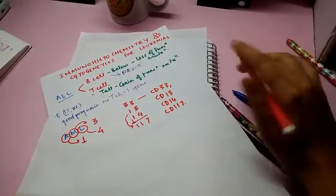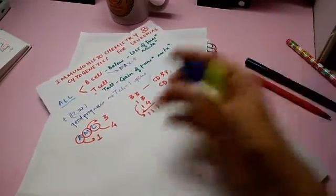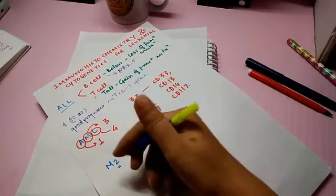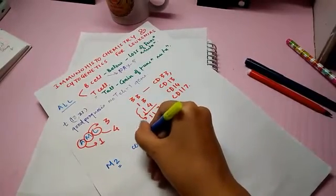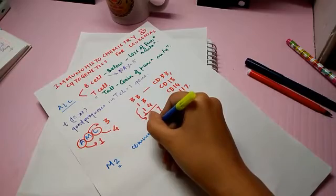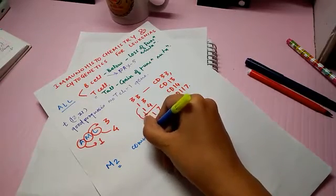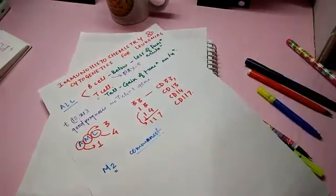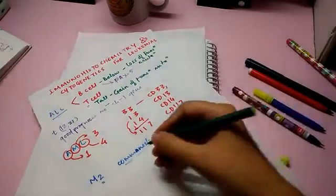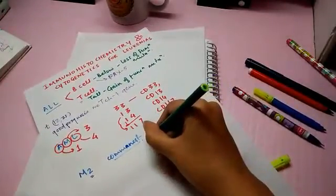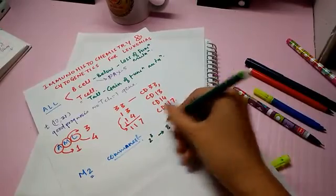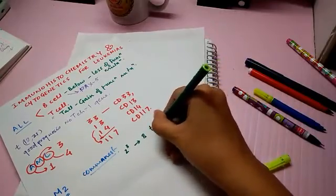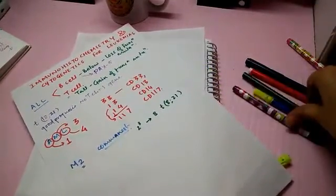These are the CD markers for AML. Then, we can start with AML M2 variant. This 2, it is the commonest. AML M2, it is the commonest. And the translocation for AML M2 is when you cube this number 2, it gives you number 8. So the translocation is 8;21 for AML M2.